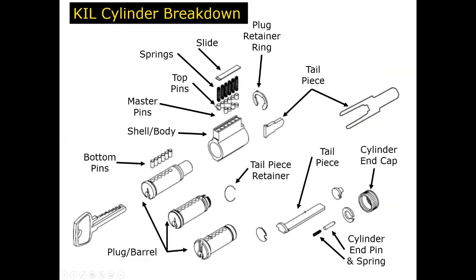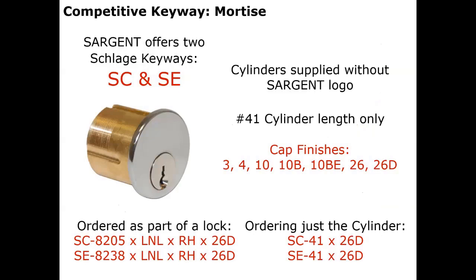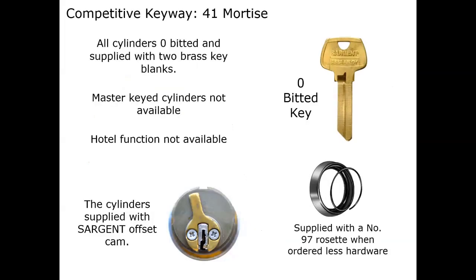We do offer some optional cylinders in competitor keyways — a Schlage C keyway or E keyway. We offer those in size 41, with a number of finishes, and they would go out at zero bitting with two blank keys. So you can order the lock set as SC-8205 by trim, hand, and finish, and you would get a zero-bitted Sargent-made Schlage cylinder in a C keyway, ready for field keying. Or you can order the cylinder by itself as SC-41 by finish. They ship out with our standard offset cam at 11 o'clock, fitting 99% of all Sargent hardware, and we include the number 97 Rosetta standard.